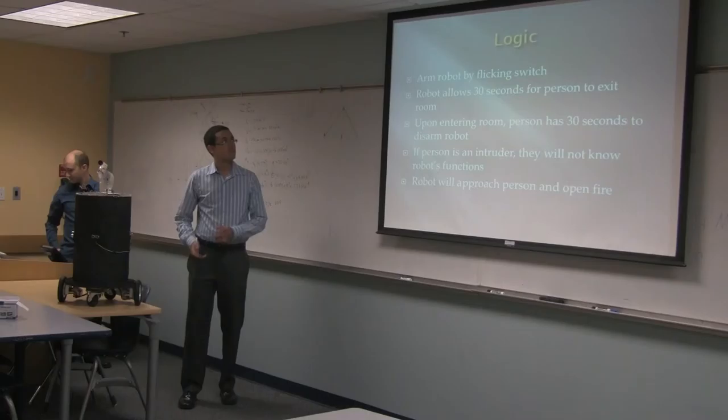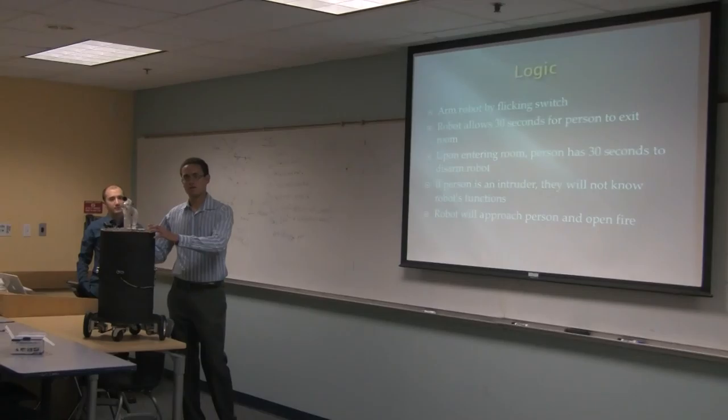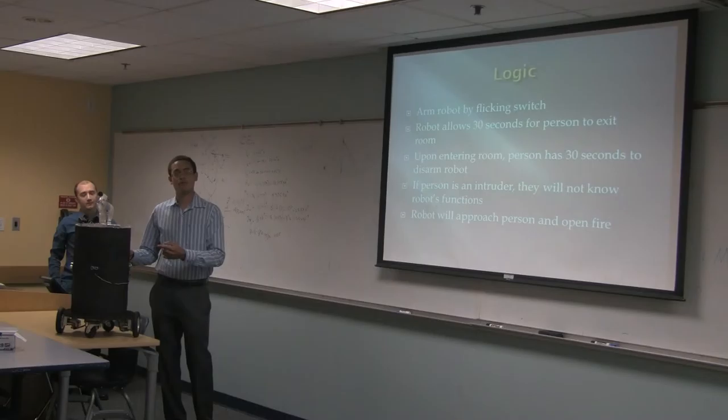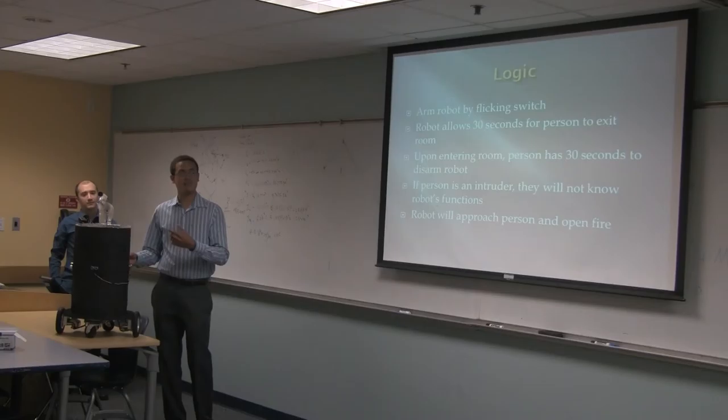So the logic sort of works like this. As you leave your room, you flip the switch and turn the robot on. So now it gives you 30 seconds to exit the room, and the robot is now armed. When you walk in, you have another 30 seconds after the detection to turn it off. However, if you're an intruder and you don't know about the robot, then you don't know to turn it off. So it will begin attacking.